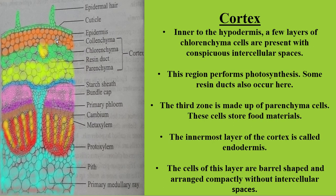Inner to the hypodermis, green colored cells with dot-like structures are found — this is called chlorenchyma, and the dot-like structures represent the chloroplast, the cell organelle responsible for photosynthesis. Along with this chlorenchyma you can also find the resin duct. The third zone is made up of parenchyma cells which help to store food material.